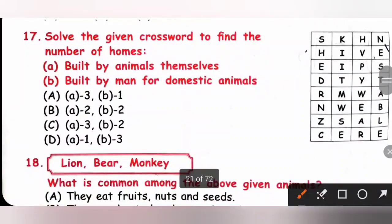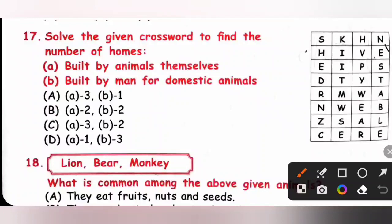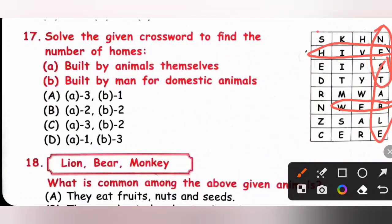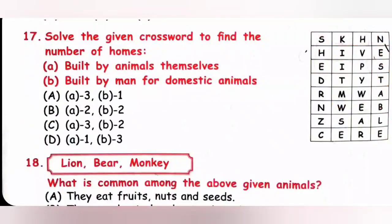Question 17: Solve the given crossword to find the number of homes. Homes built by animals themselves include hive, web, and nest — that is three. Homes built by man for domestic animals include shed and stable — that is two. So the answer is three and two. Option C is the correct answer.